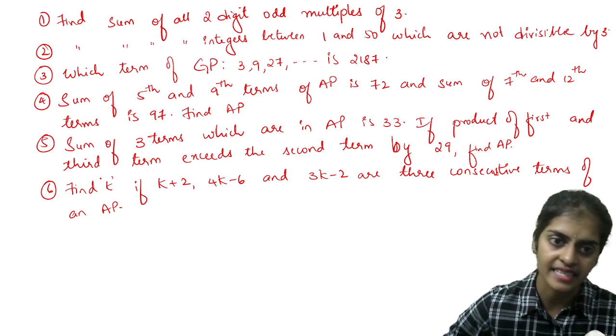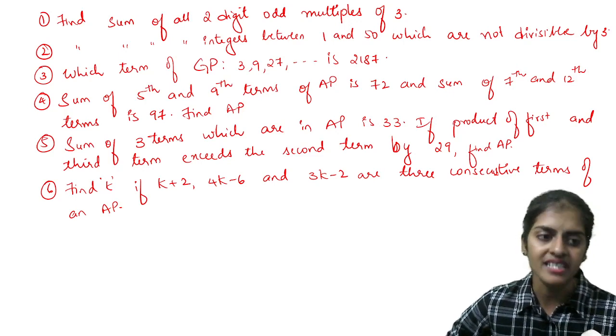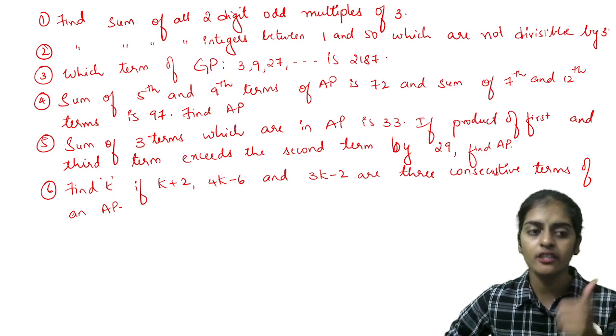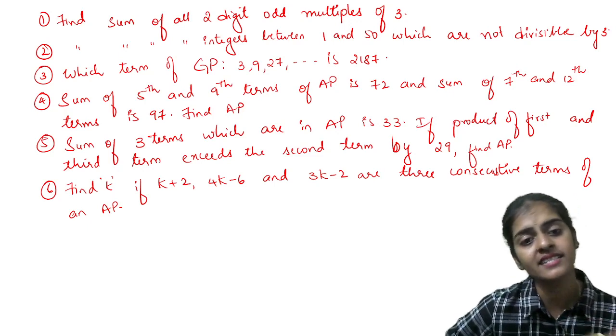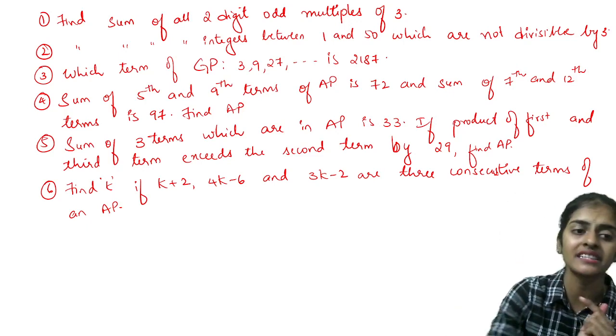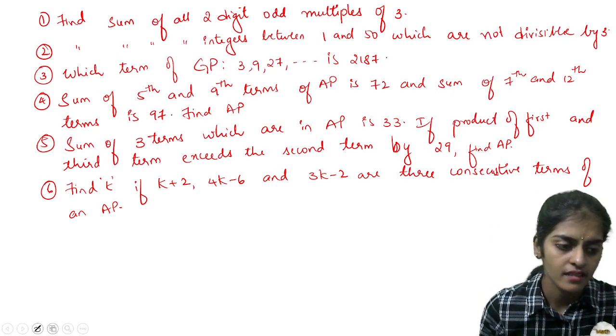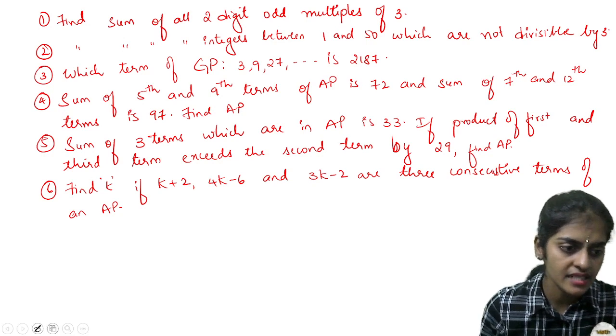Next: sum of three terms which are in AP is 33. If the product of first and third term exceeds the second term by 29. First of all, when three terms are in AP—we were learning this in Abhya Sadeepika questions—when three terms are in AP, just take the terms as a minus d, a, a plus d.